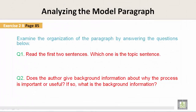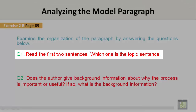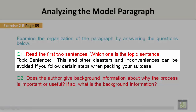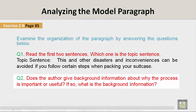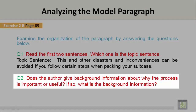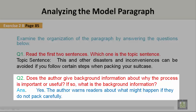Exercise 2b, page 85. Examine the organization of the paragraph by answering the questions below. Question 1: Read the first two sentences. Which one is the topic sentence? Topic sentence: "This and other disasters and inconveniences can be avoided if you follow certain steps when packing your suitcase." Question 2: Does the author give background information about why the process is important or useful? If so, what is the background information? Answer: Yes. The author warns readers about what might happen if they do not pack carefully.